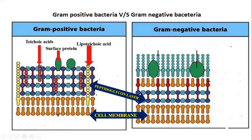Teichoic acids are of two types: cell wall teichoic acid and lipoteichoic acid. Cell wall teichoic acid is covalently linked to the peptidoglycan layer. Lipoteichoic acid, also called membrane teichoic acid, is linked to the cell membrane. Cell wall teichoic acid cannot be linked to the cell membrane.